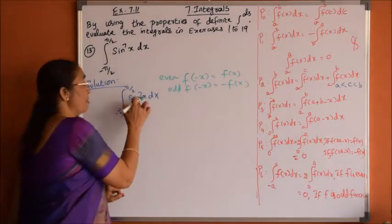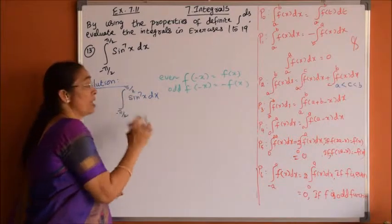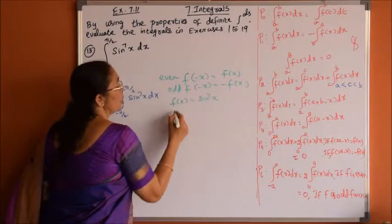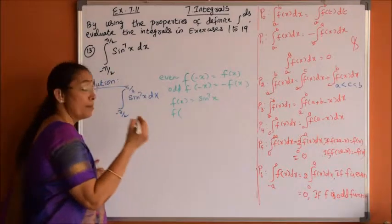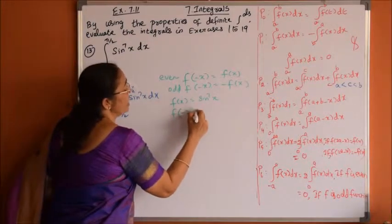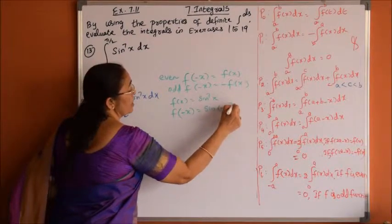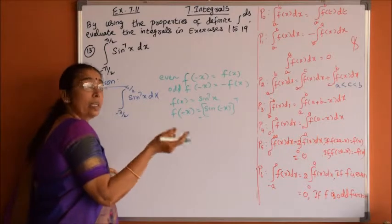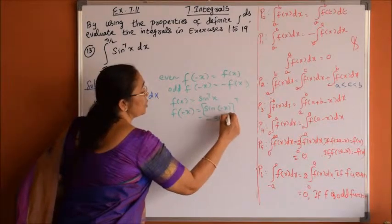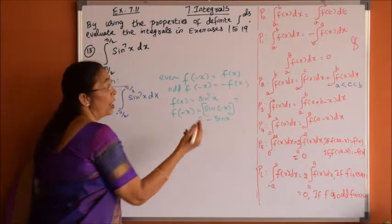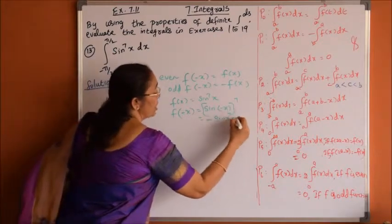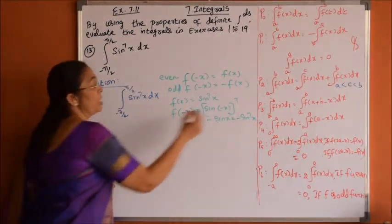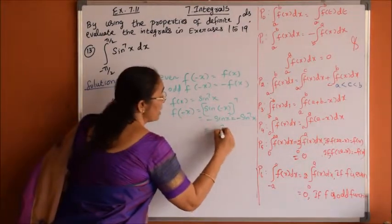Let us check whether the given function is odd or even. f of x equals sin to the power 7x. Replace x with minus x: f of minus x equals sin of minus x, whole to the power 7. Since sin of minus theta equals minus sin theta, this becomes minus sin x to the power 7. Since 7 is an odd power, f of minus x equals minus sin power 7x, which is minus f of x.